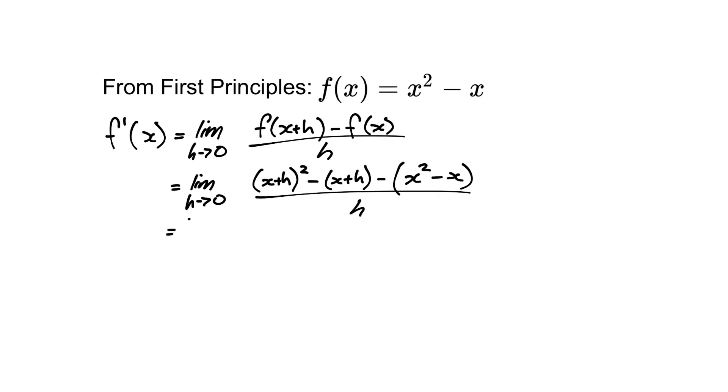So let's just expand this out. So we get the limit as h tends towards 0. So x plus h all squared becomes x squared plus 2xh plus h squared. The negative x comes through and the negative times a positive h becomes a minus h. Negative x squared, negative times a negative is a positive, and all of that is over h.